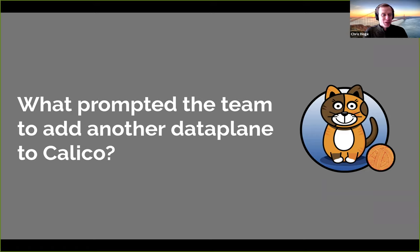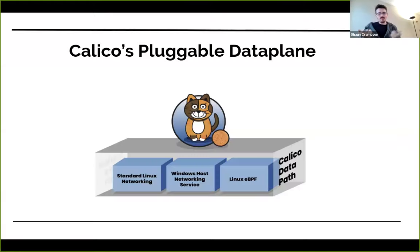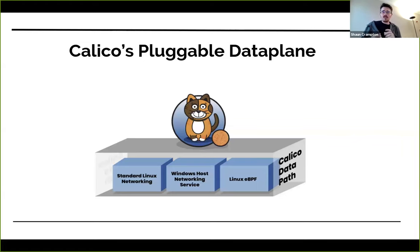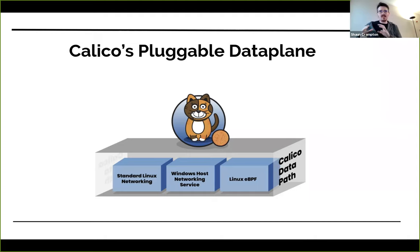For the first question: what prompted the team to add another data plane to Calico? From the very beginning, we designed Calico with pluggable data planes in mind. Our general philosophy is we want to use the best tool for the job. When we first started with Calico, we went for tried and true technologies — standard Linux networking with IP tables and BGP for networking, because that's proven at internet scale. That's great for a lot of use cases if you want to stick with tried and true technologies and you're fairly conservative.